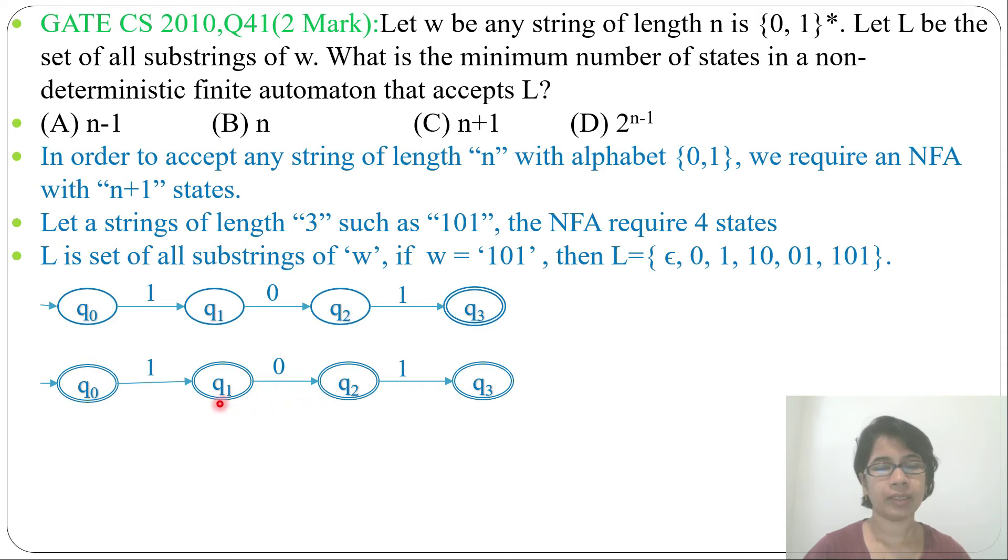If you make all states as final, then it will accept all prefixes. But the language is all substrings. To find all substrings, we will add another transition: from q0 by 0 it will go to q2. Now it will accept 0 and it will accept 01. You can check - now it will accept ε, then 0, then 1, 10, then 01, then 101.